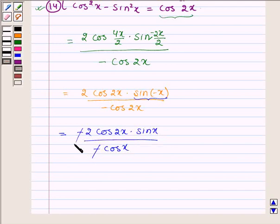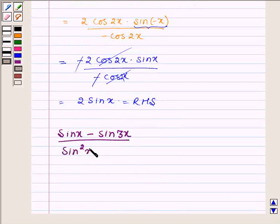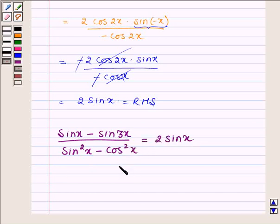Minus minus cancels out, cos 2x with cos 2x, and we are left with 2 sin x, which is the right hand side of the given problem. And hence we can say that sin x minus sin 3x upon sin square x minus cos square x is equal to 2 sin x. Hence proved.